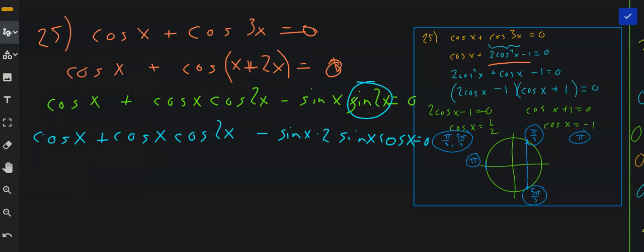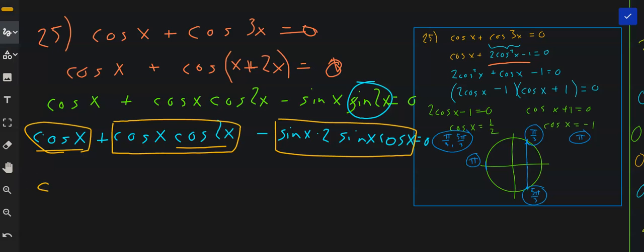Now I know here in a minute we're going to have to do something with this. But I notice in every single one of these terms, in that term, in this term, and in this term, I notice that every one of them has a cosine x. So if I pull that cosine x out, that would leave me with 1 plus cosine 2x minus 2 sine squared x equals 0.